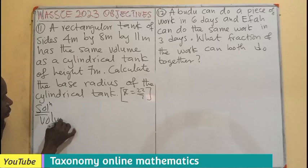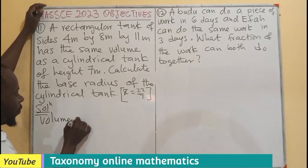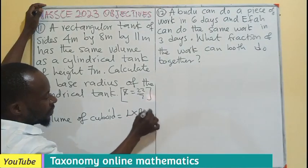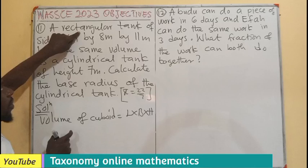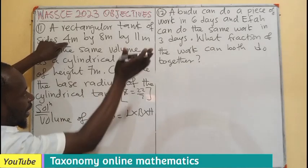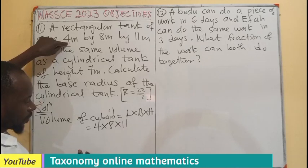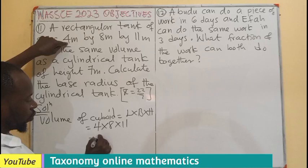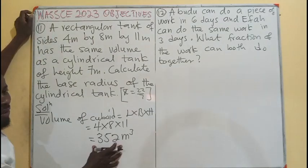The volume of a rectangular tank, which is going to be a cuboid, is length times breadth times the height. That is the volume of anything in the form of a rectangle, a cuboid. So we are going to have in the same dimension, 4 times 8 times 11. That is going to be 32 times 11, which will be 352 meter cube. This is the volume.